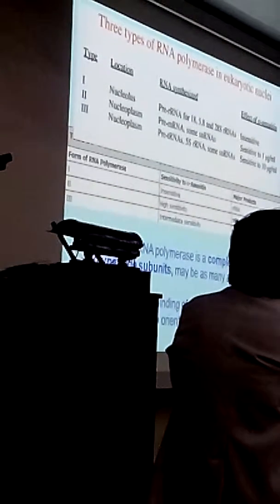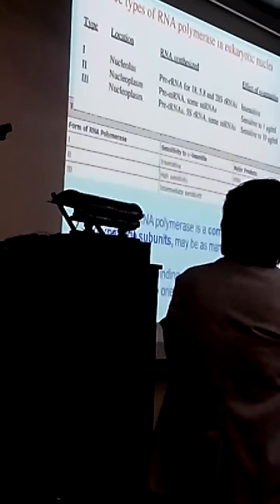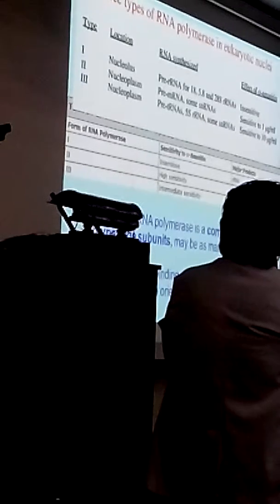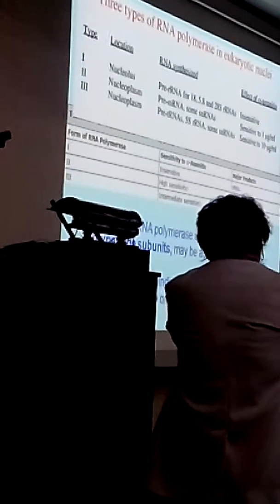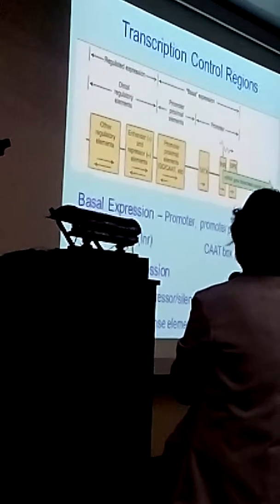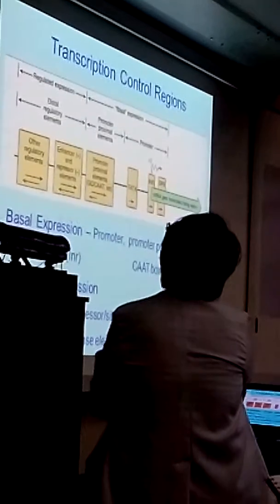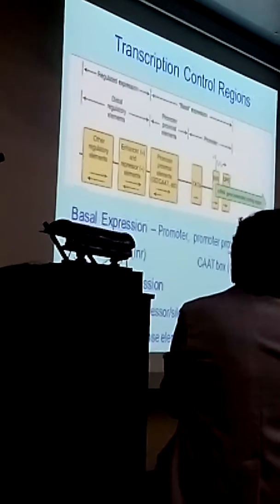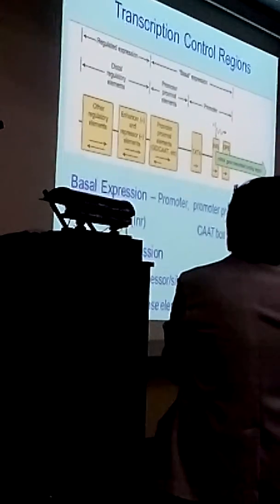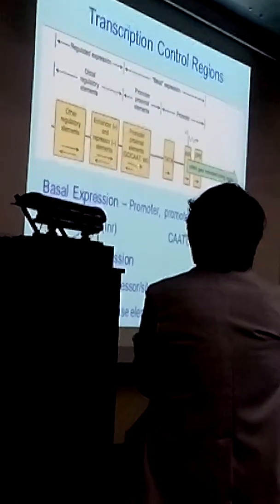Then each require the binding of transcription factors to locate the promoter and orient the polymerase correctly. So transcription factors are very important for transcription. So you have your basal expression and regulated expression. So in the promoter site, you have the TATA and the CAAT. This is where, this is how frequent.